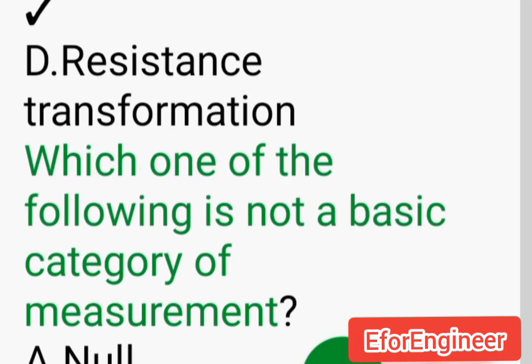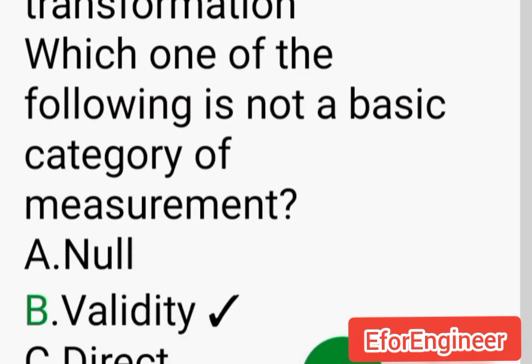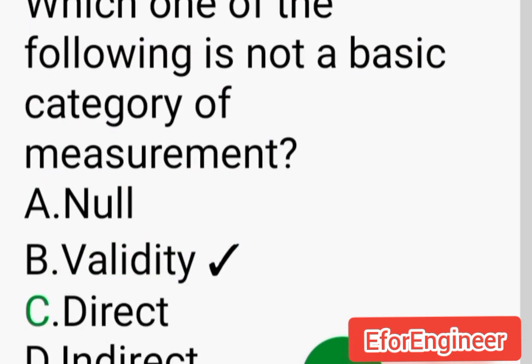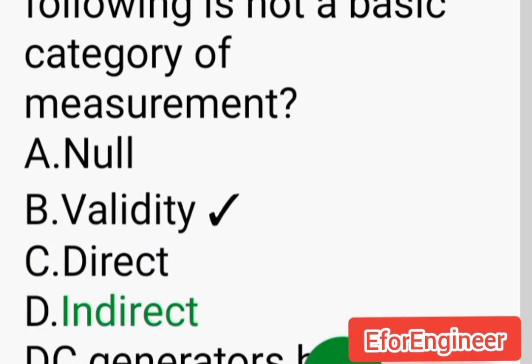Which one of the following is not a basic category of measurement? A. Null, B. Validity, C. Direct, D. Indirect.